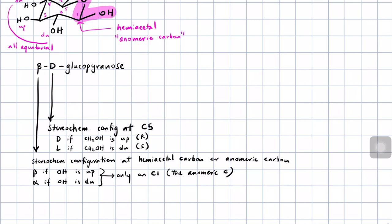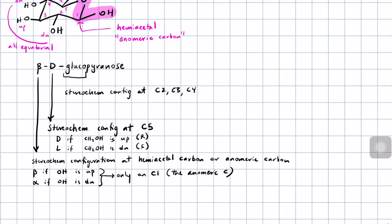So beta refers to stereochemical configuration at carbon one; D refers to stereochemical configuration at carbon five. The next portion — glucose — refers to stereochemical configuration at carbons two, three, and four. If we draw the molecule in this way, we're going to use the term gluco if it's down, up, down from this perspective. We're going to use the term manno if it's up, up, down. And it will be galacto if it's down, up, up.